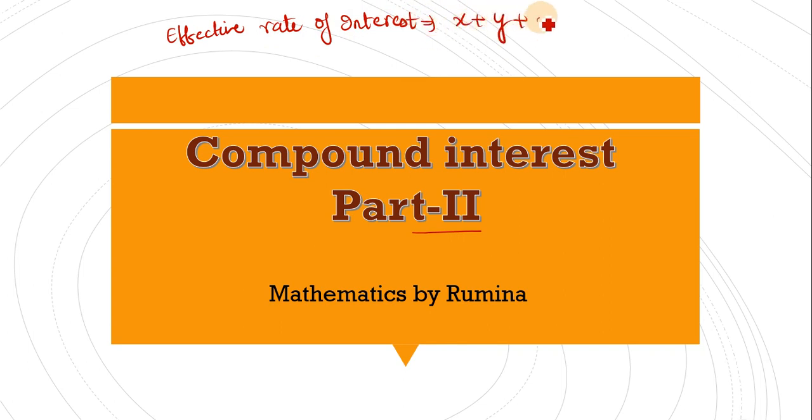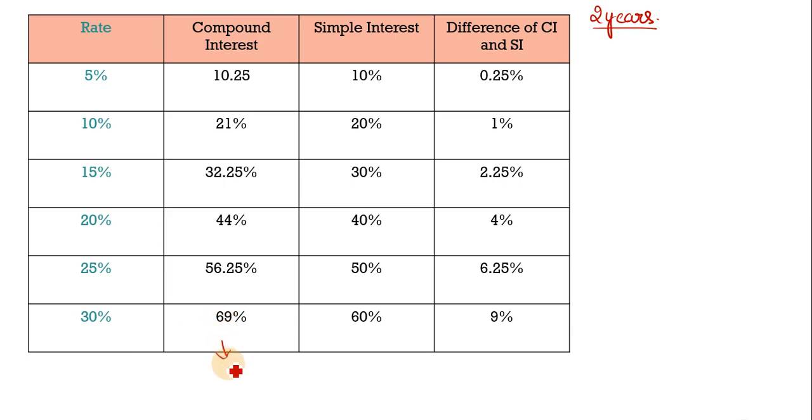I am writing this formula over here. The formula name is effective rate of interest. The formula is: x plus y plus xy upon 100. This is our formula, when your x is the rate of first year and y is the rate of second year. But if the rate is the same for both years, then it becomes easier. We can directly use it to find compound interest.